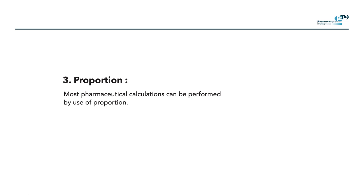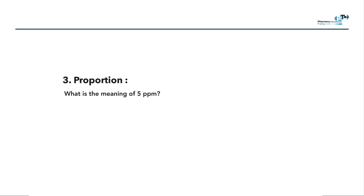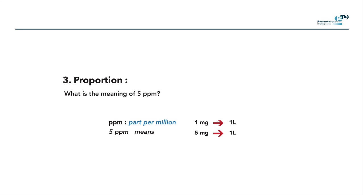Another expression is proportion. Most pharmaceutical calculations can be performed using proportions. One important expression is ppm, which means parts per million. The 'part' is expressed as the weight of solute in milligrams, and the 'million' is the volume of solution expressed in liters. So ppm means one milligram of solute dissolved in one liter of solution. For example, 5 ppm means 5 milligrams of solute dissolved in one liter of solution.